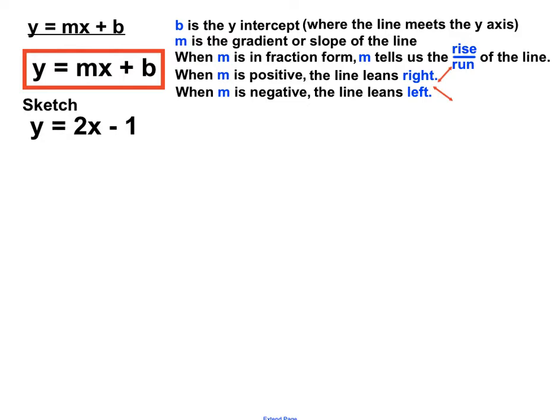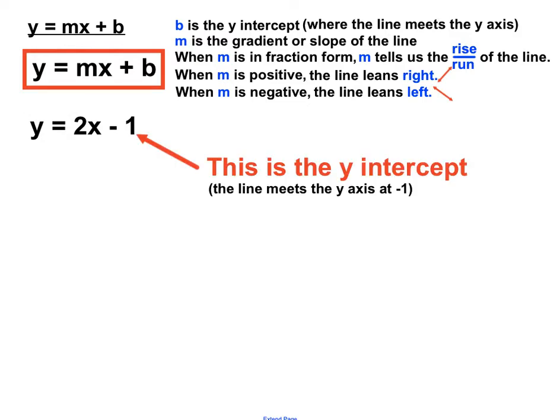This time we're asked to sketch y equals 2x minus 1. So let's find out enough about how to position this line on the number plane so we can avoid having to do a table of values, which might take a bit longer.